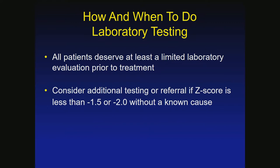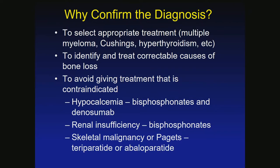All patients deserve at least a limited set of tests, and additional testing is preferred if the Z-score is very low. So why do we need to confirm a diagnosis? Why couldn't we just treat everyone with calcium, vitamin D, and a bisphosphonate?